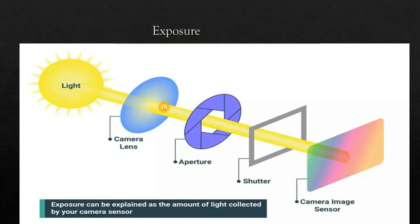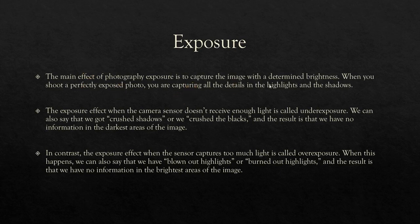First of all, what is exposure? Exposure is nothing but the amount of light collected by your camera sensor. In our Android device we have a camera sensor to capture images. Light passes through the camera lens, then through the aperture, then through the shutter, and finally falls onto the camera image sensor. How much light is falling on this sensor is called exposure. The main effect is to capture the image with determined brightness — when you shoot a perfectly exposed photo, you capture all the details.